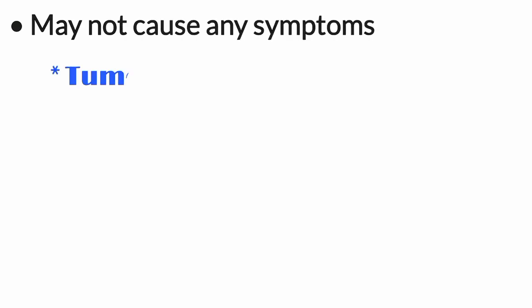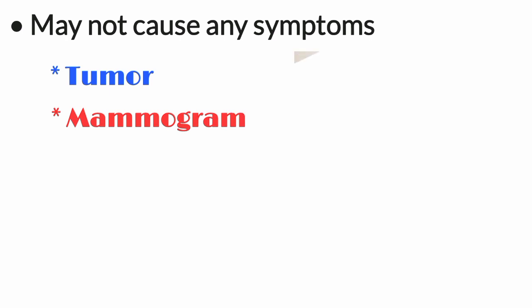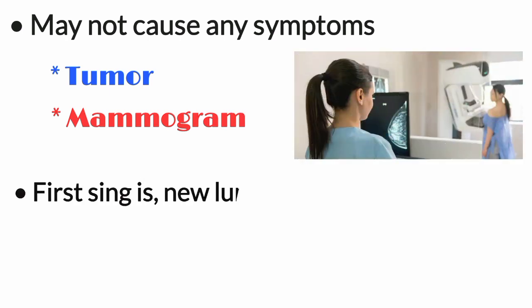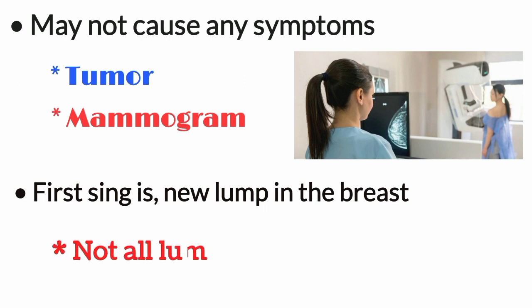In many cases, a tumor may be too small to be felt, but an abnormality can still be seen on a mammogram. If a tumor can be felt, the first sign is usually a new lump in the breast that was not there before. However, not all lumps are cancer.